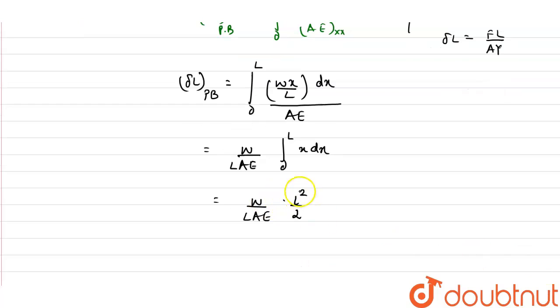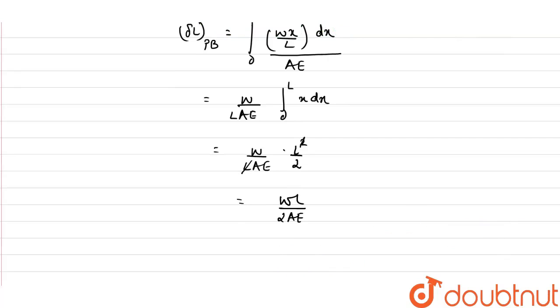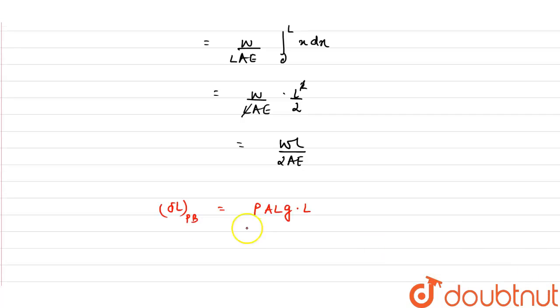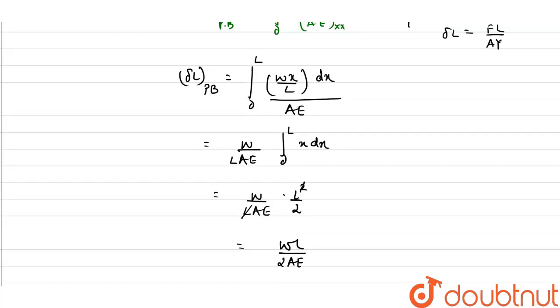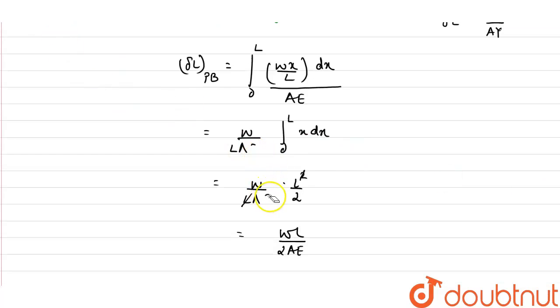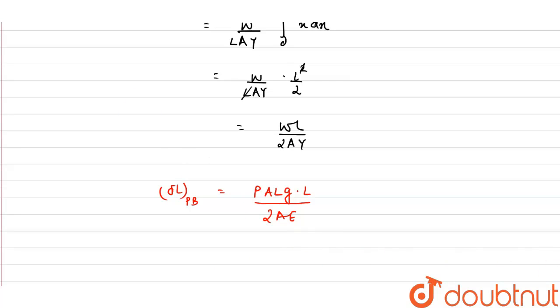Now W we have got as ρAL into g, so ΔL for the prismatic bar will be equals to ρAL into g into length L divided by 2AY. Young's modulus is given to us as Y, so replace E everywhere. So this is Y over here, it is Y over here. So it will be 2AY. A cancels A, so this will be equals to ρ into g into L² upon 2Y.